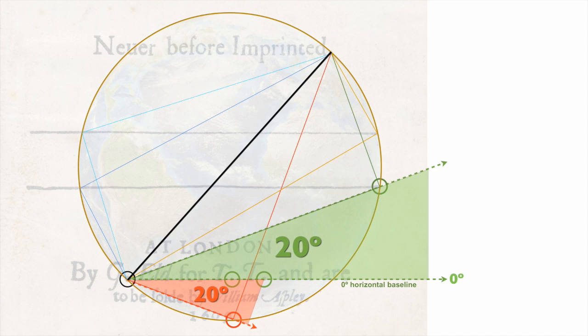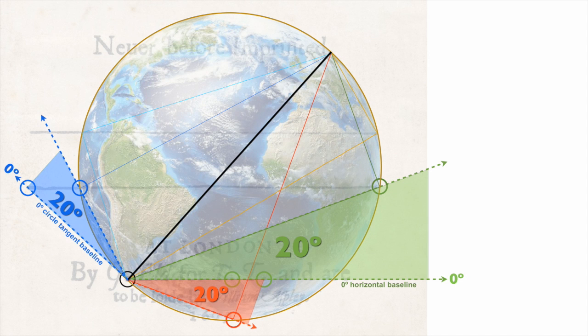And we have another baseline here, don't we, that we discovered the tangent to the circle. If we use that as a baseline, there's another angle here, 20 degrees. They're all perfectly 20 degrees.